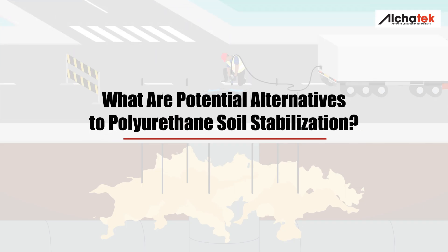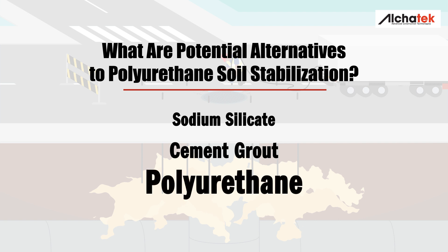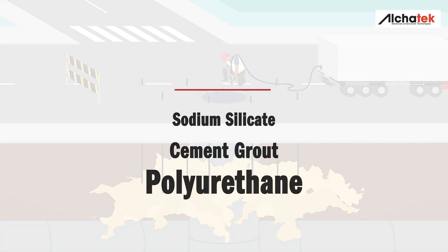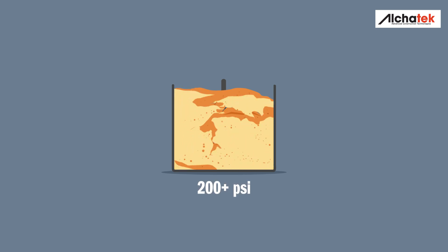What are potential alternatives to polyurethane soil stabilization? There's sodium silicate, but wet and dry cycles can break it down. There's cement grout, but it's heavy, it shrinks and cracks, and it doesn't permeate soil. Polyurethane, on the other hand, lasts forever. When permeated into sand, Alcatec soil stabilization resins can achieve strengths over 200 psi — that's almost as hard as concrete.